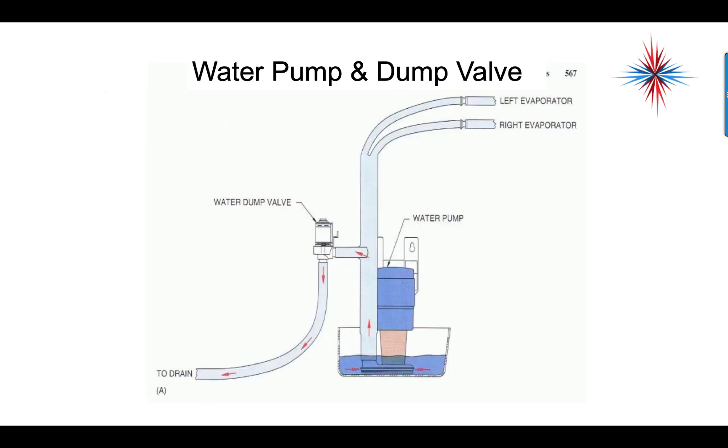The water dump actually works by basically a valve opens. The pump still is running, but the water gets diverted out the pump valve because the water will take the path of least resistance. As long as the water dump valve is lower to the drain than the evaporator panels, the water will run out of the dump valve.